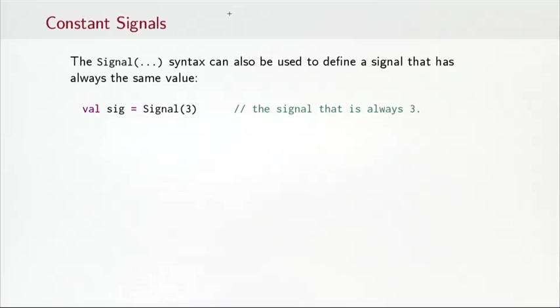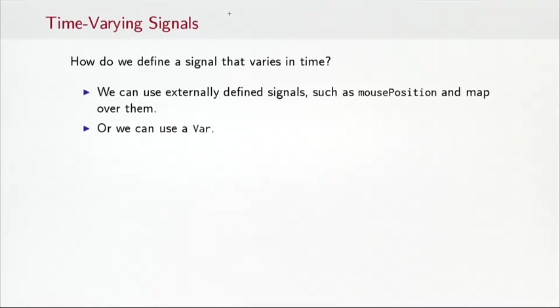So we've seen the signal syntax to define the rectangle signal in terms of the mouse position signal. But it can also be used to define a signal that has no dependencies and always defines the same value. So for instance Signal(3) would define the signal that was constant three. So we've seen constant signals. But how do we define a signal that varies in time? Well, some of these varying signals are defined externally, something like mousePosition. We can also map over the externally defined signals that vary in time and that gives us new signals that vary in time. Or the other way is that we can use a var.